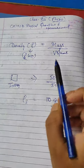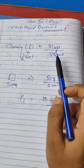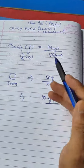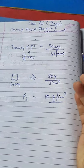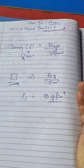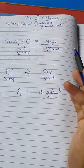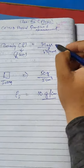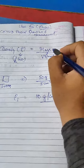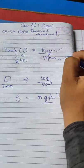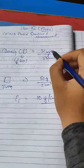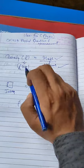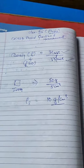Density can be described as mass per unit volume of a substance — it can be any substance: iron, copper, wood, plastic, or whatever. To find density, we need to measure two things: mass and volume. The ratio of mass to volume is called density.